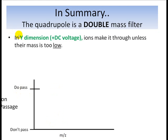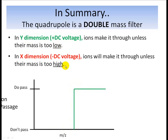So in the y dimension, to summarize, which has a positive DC voltage on those rods, the ions make it through unless their mass is too low. This is a little depiction of what the filter function is like for those y dimension electrodes. High like this means that they do pass. Low means that they don't pass. Some critical value of mass charge ratio above which it will make it through, but below that it won't.